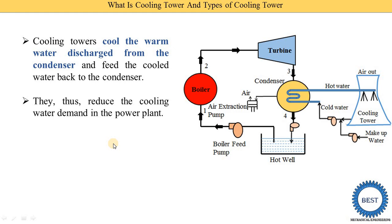Suppose a thermal power plant is near a river where water is available in a large quantity. In that case, we can use continuous fresh water from the river, supply it to the condensers, and the hot water is directly discharged back into the river. But when the quantity of water is limited, we need to use the cooling tower — meaning we can reuse the same water again and again, reducing the overall water requirement.